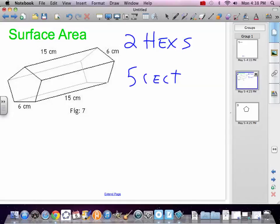Rectangles are pretty easy. They're 15 by 6, which is 90. And we have five of them, because there are five sides. One, two, three, four, five. That one in the back top there. So 450 just for the sides.